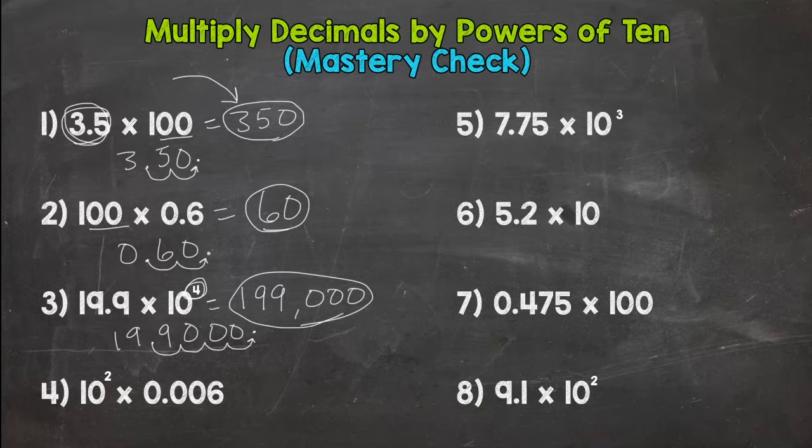So we get to 199,000 as our product. Number 4, 0.006 times 10 to the 2nd, or 10 squared. So we move the decimal twice, 1, 2, and it ends up between the 0 and the 6, so we get 0.6.